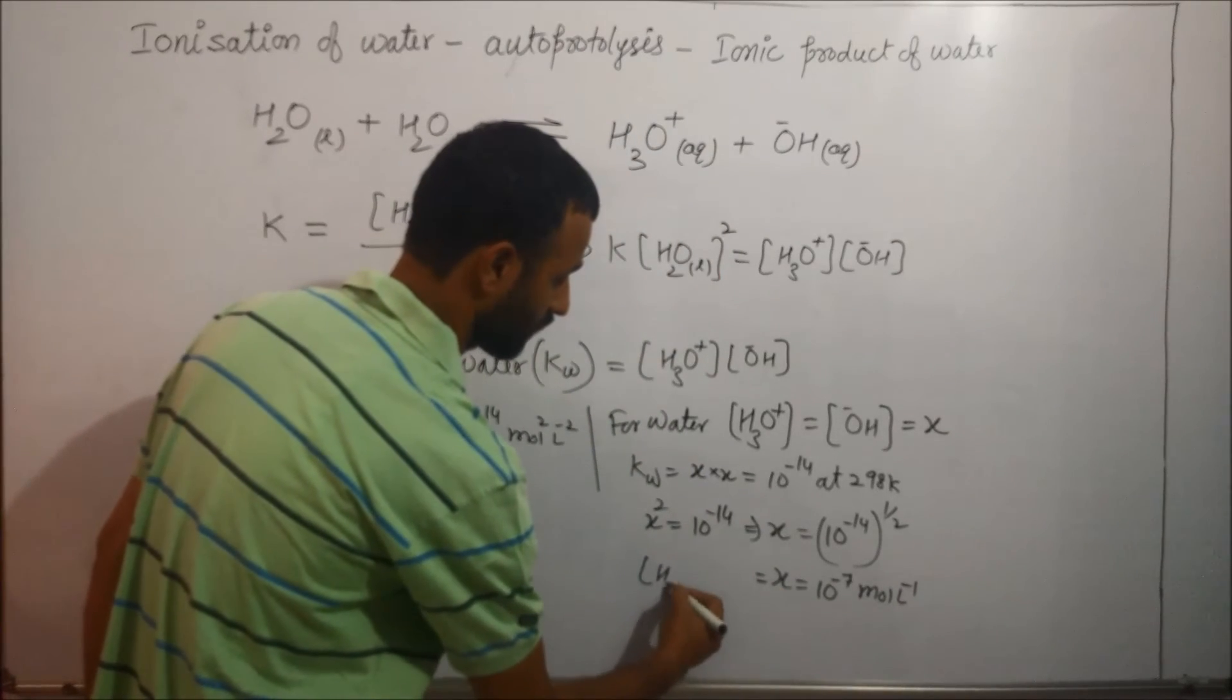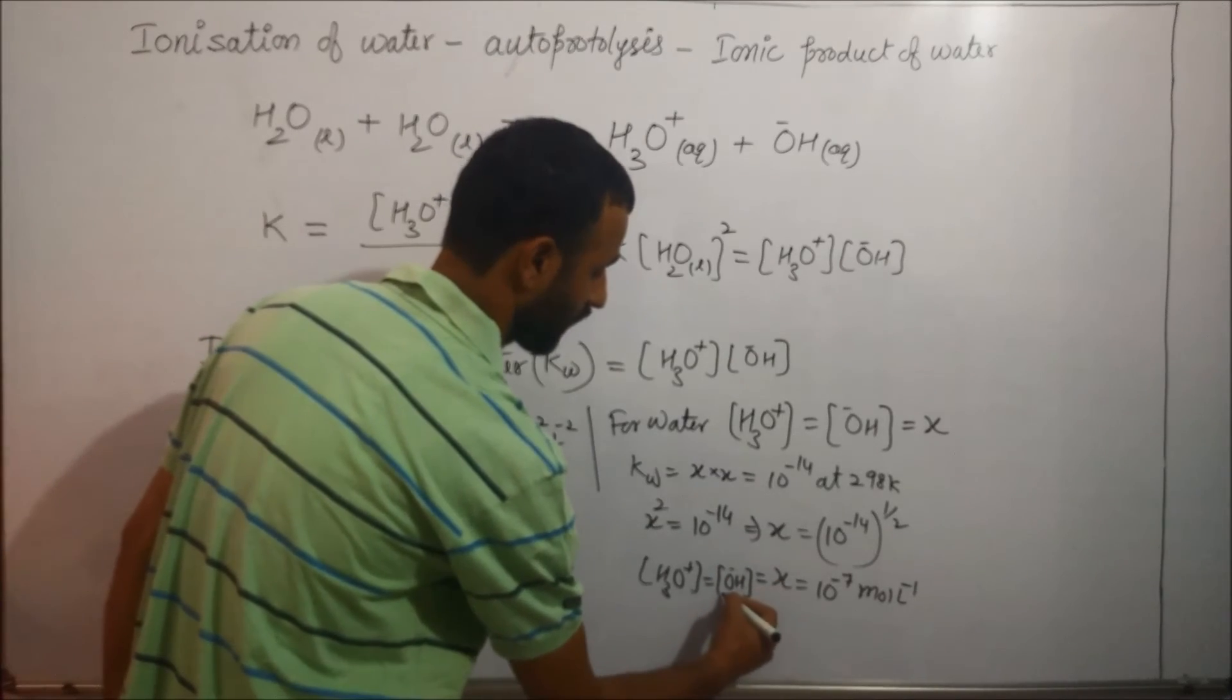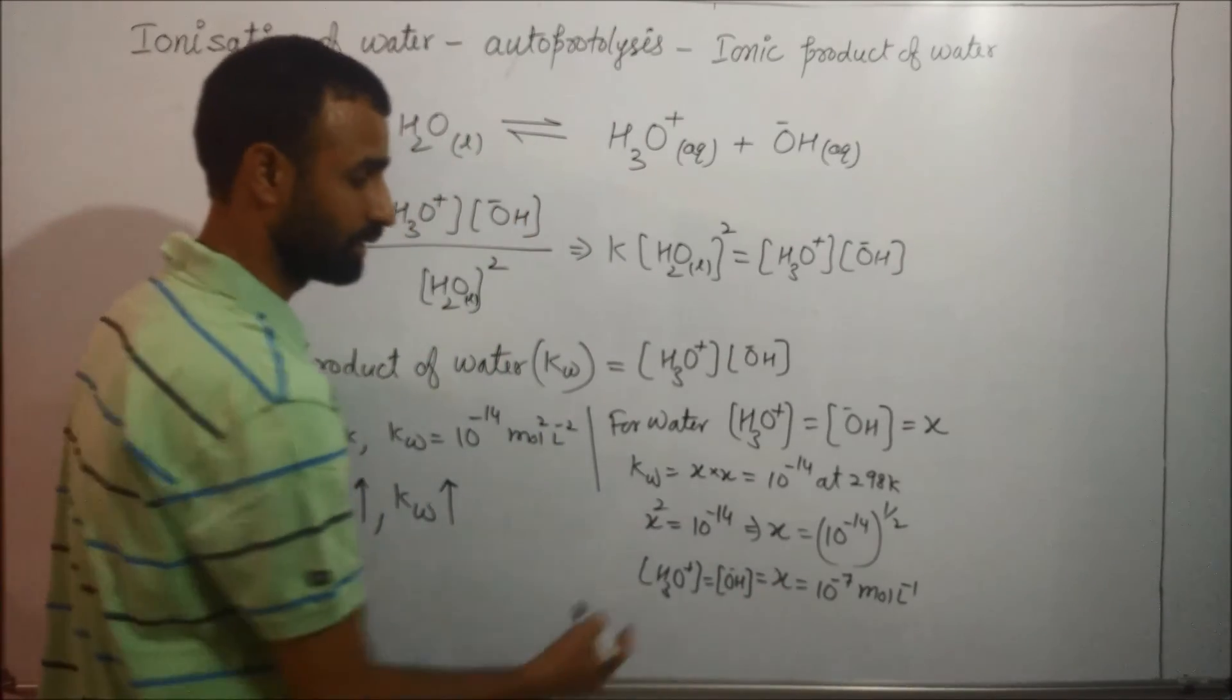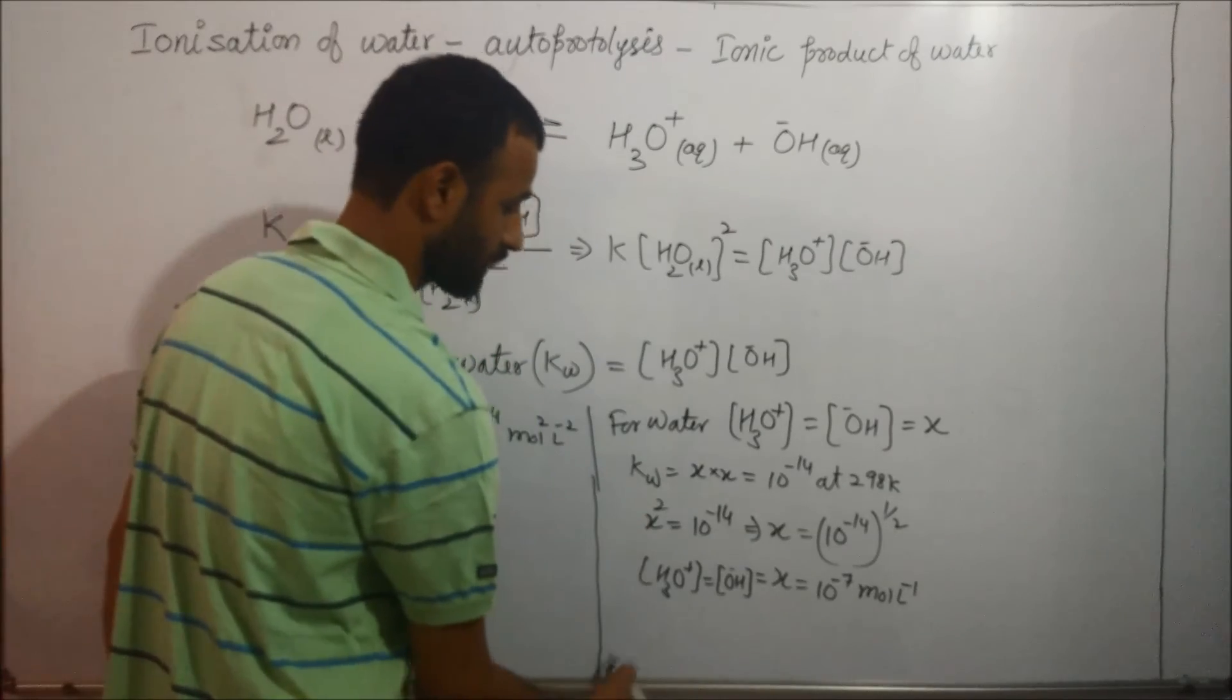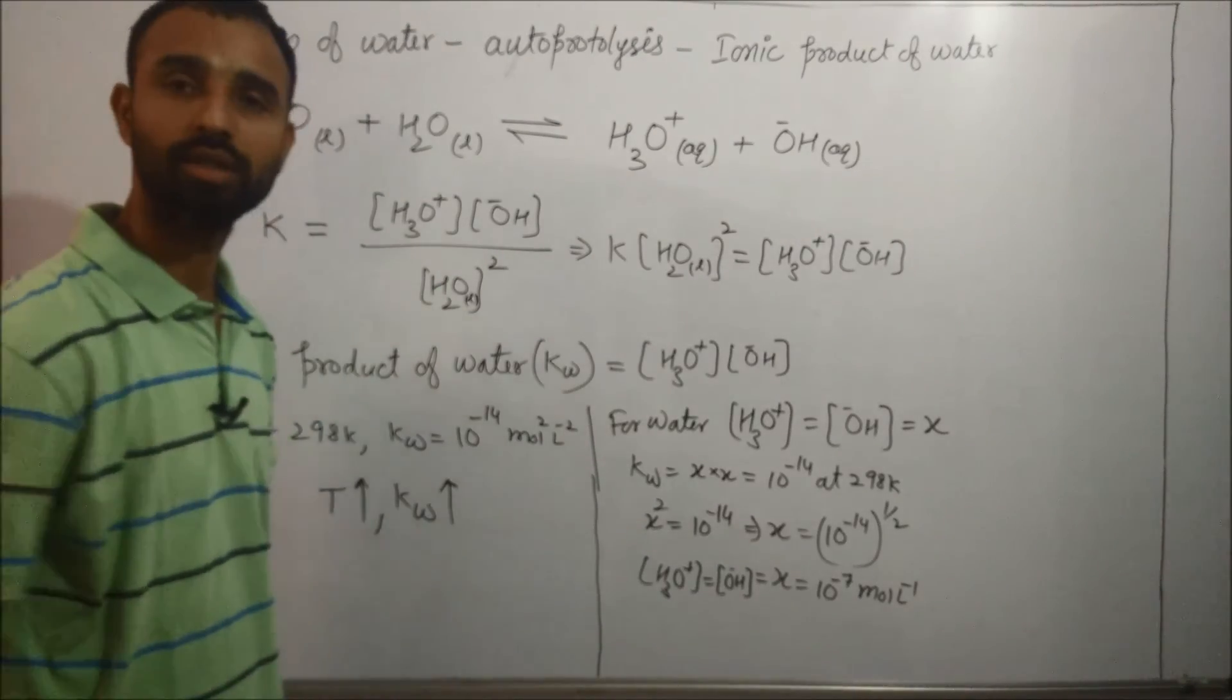That means, H3O+ concentration as well as OH- ion concentration is equal to 10 raised per minus 7 for neutral solution.